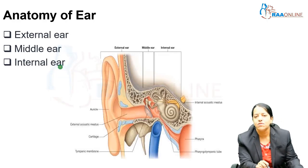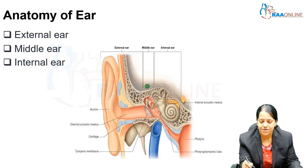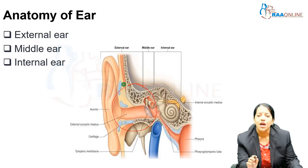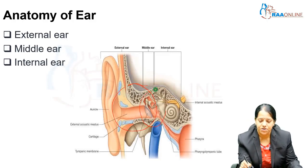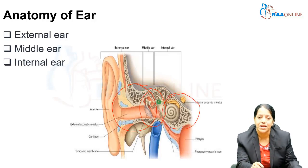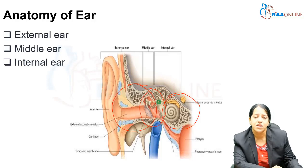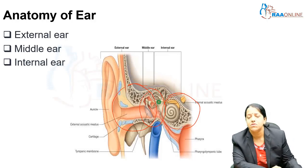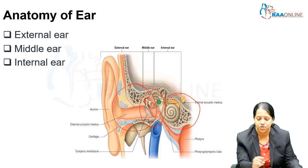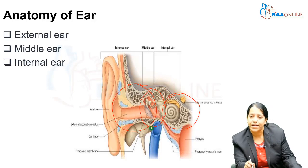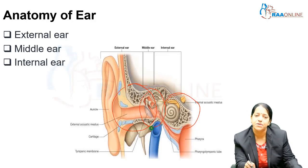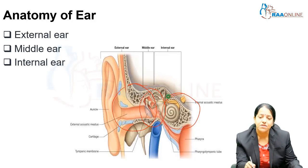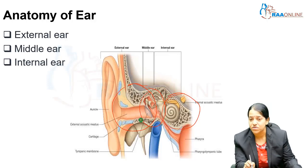Coming to the ear, we are going to classify the ear into an external ear, a middle ear which is present in the middle, and then the internal ear. The external ear consists of the pinna or auricle, the external acoustic meatus, the external acoustic canal, and the tympanic membrane — it ends at the tympanic membrane, which starts vibrating because of the sound waves. Then you have the middle ear in the center which has the ossicles, and the vibration is carried through the middle ear.